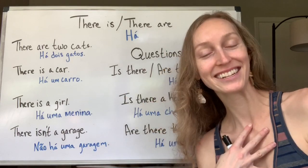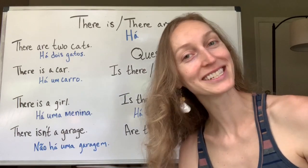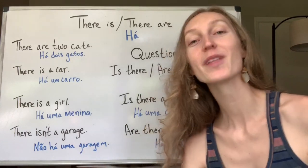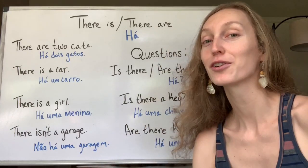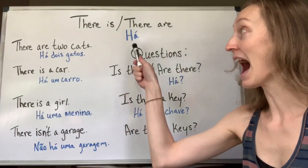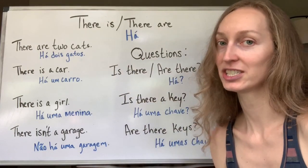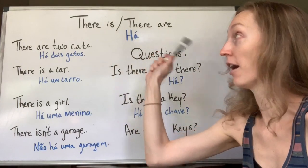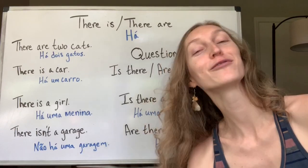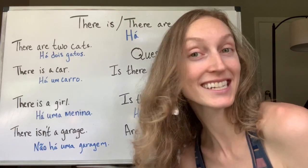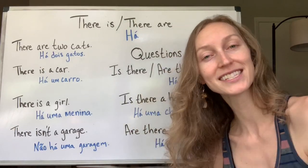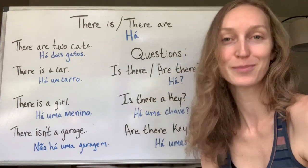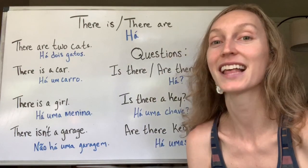Hello everyone and welcome back to my channel, Americana ala Brasil. Olá pessoal, bem-vindos de volta ao meu canal, Americana ala Brasil. Hoje eu vou conversar com vocês sobre 'há', que em inglês significa 'there is' and 'there are'. Mas antes de começar o vídeo, por favor, já dá seu like. E se você não é inscrito ainda no canal, por favor, se inscreve-se aqui e continua melhorando seu inglês comigo, Amanda, sua professora de inglês. Vamos lá?